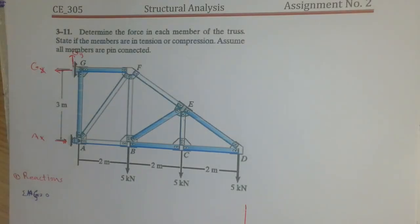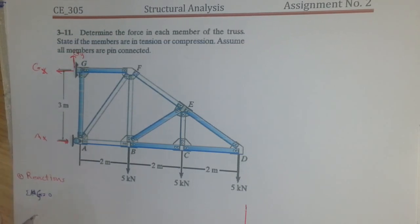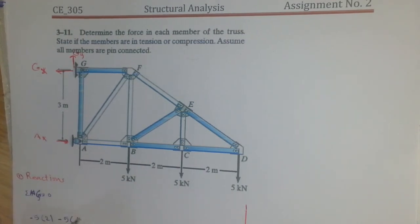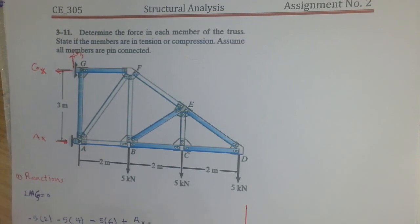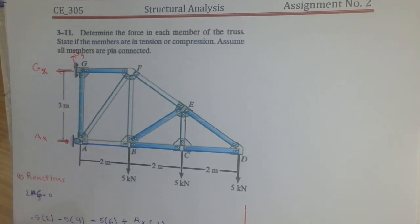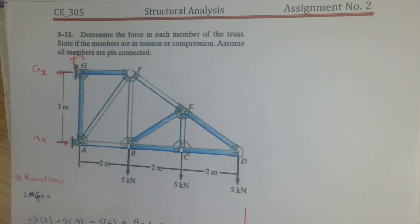The problem asks us to determine the forces in each member. We start by finding the reactions. Taking summation of moments around point G: 5 kilonewtons multiplied by 2, minus 5 multiplied by 4, minus 5 multiplied by 6, plus Ax multiplied by its distance of 3 meters equals zero. From this we get Ax equals 20 kilonewtons.